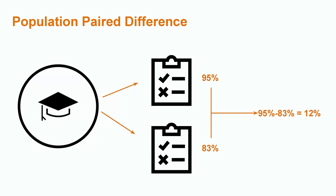For example, a student's score on their first test of the term and their second test would be a single paired observation. If the student received a 95 on the first and an 83 on the second exam, the paired difference observation would be 12%.